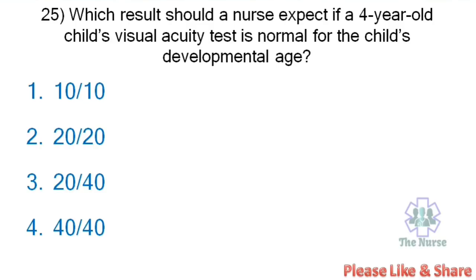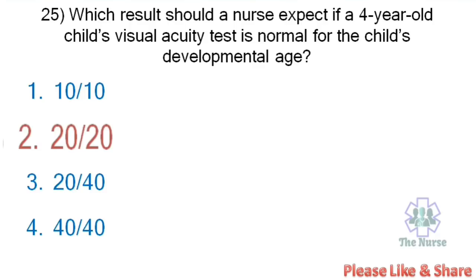Next question: Which result should the nurse expect if a 4-year-old child's visual acuity test is normal for the child's developmental age? Options: 10/10, 20/20, 20/40, 40/40. The correct answer is 20/20. At the age of 4, visual acuity should be 20/20 — that is normal vision.